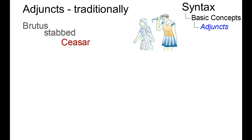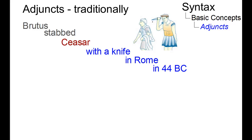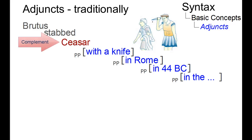In other words, adjuncts can be stacked: 'Brutus stabbed Caesar, with a knife, in Rome, in 44 before Christ, in the Ides of March,' and so on. In these examples, the prepositional phrases are adjuncts to 'stab', whereas the noun phrase 'Caesar' is a complement.